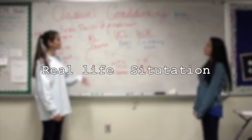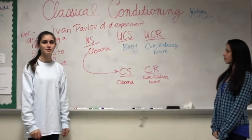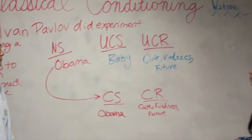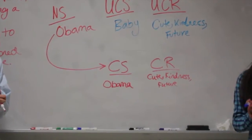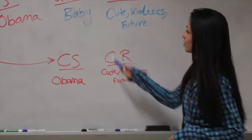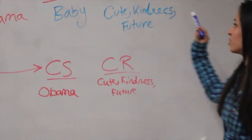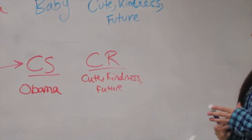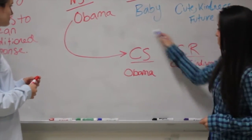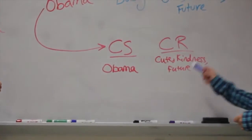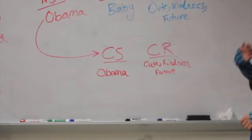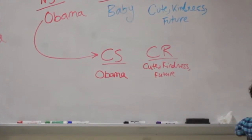Associating Ivan Pavlov's experiment on dog salivation in response to food, he also came up with real-world examples, and so did we. In everyday advertising, politicians like to use this a lot. Most of them like to kiss babies, and that's because our unconditioned response to babies is they're cute, kind, and innocent, and we think of new generations. So politicians kiss babies so that we create a conditioned response — every time we see a president like Obama kissing a baby, we think of the future, possibilities, and kindness.